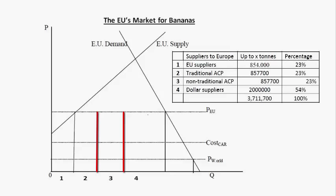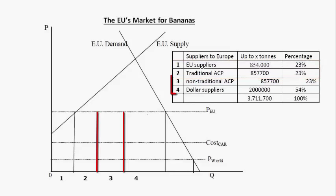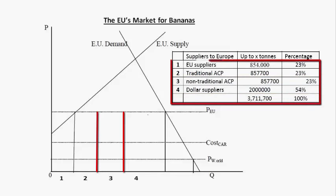The non-traditional ACP countries could supply up to 857.7 thousand tons, but if they couldn't, the overall quantity allocated to the non-traditional ACP plus the dollar countries was two million tons. Doing some percentages here: we have 1.7 million from domestic producers plus ACP, and then 2 million from non-traditional ACP and dollar countries, giving us about 3.7 million total.